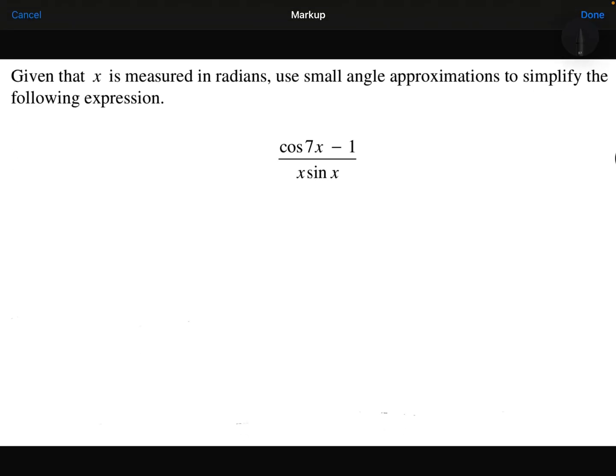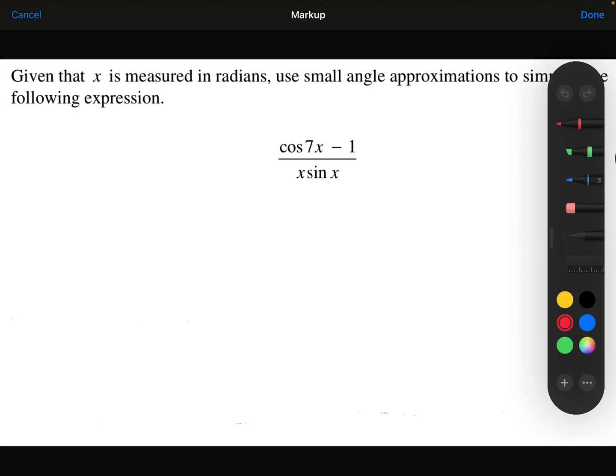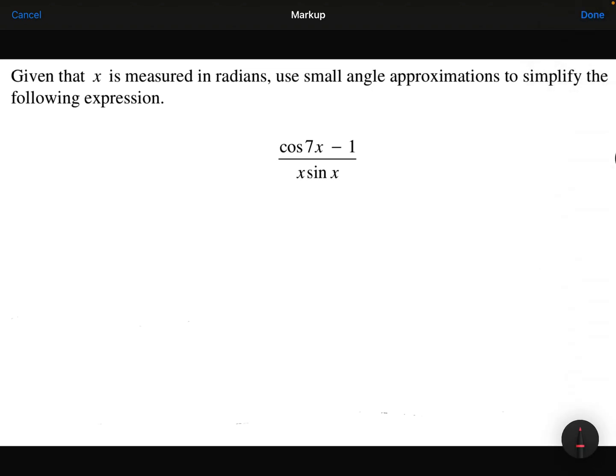So here I'm told that x is measured in radians, which is required for the small angle approximations to work. Use the small angle approximations to simplify this expression. So, cos 7x minus 1. Now I know from the formula that cos θ can be approximated to be 1 minus θ squared over 2.